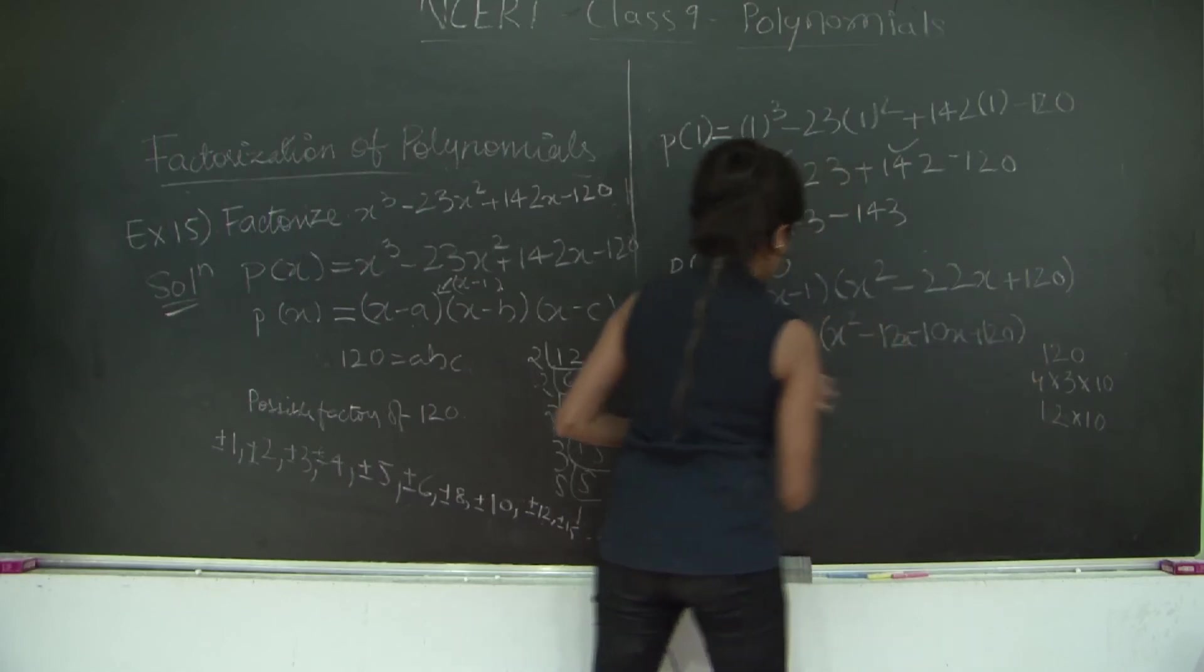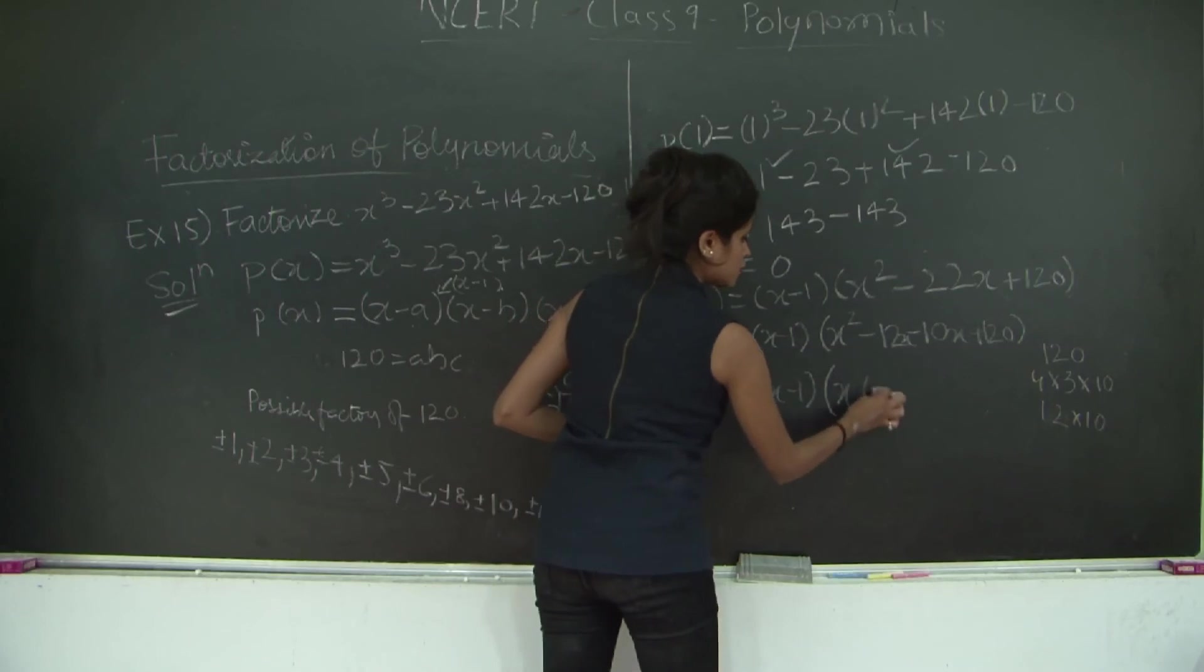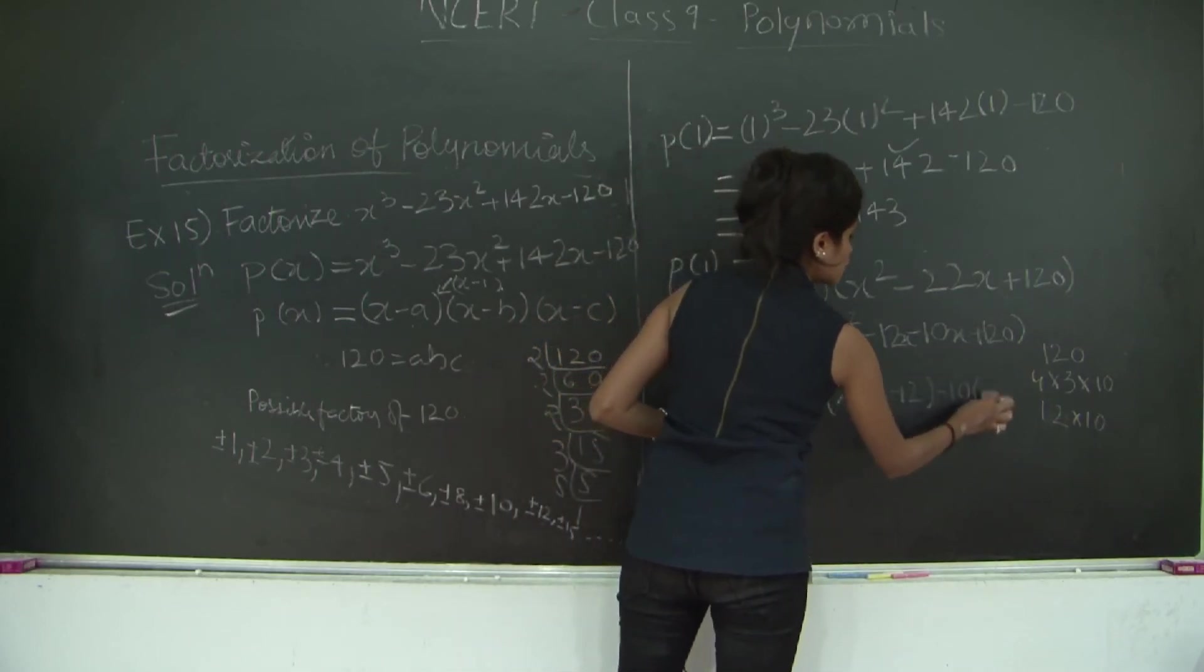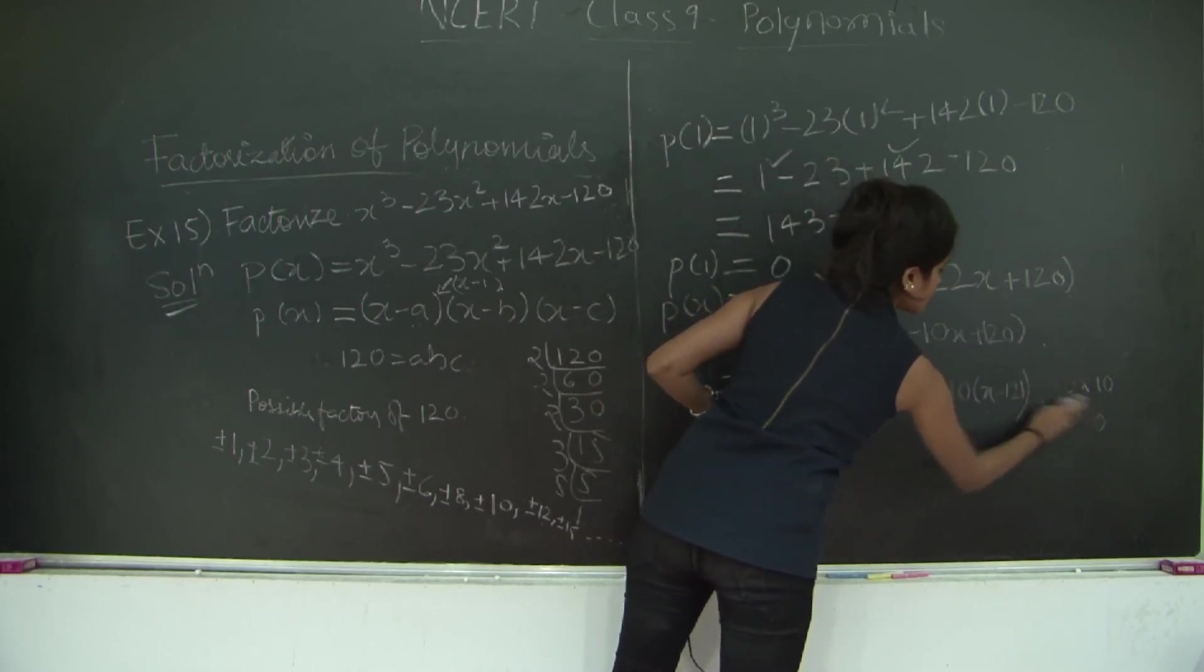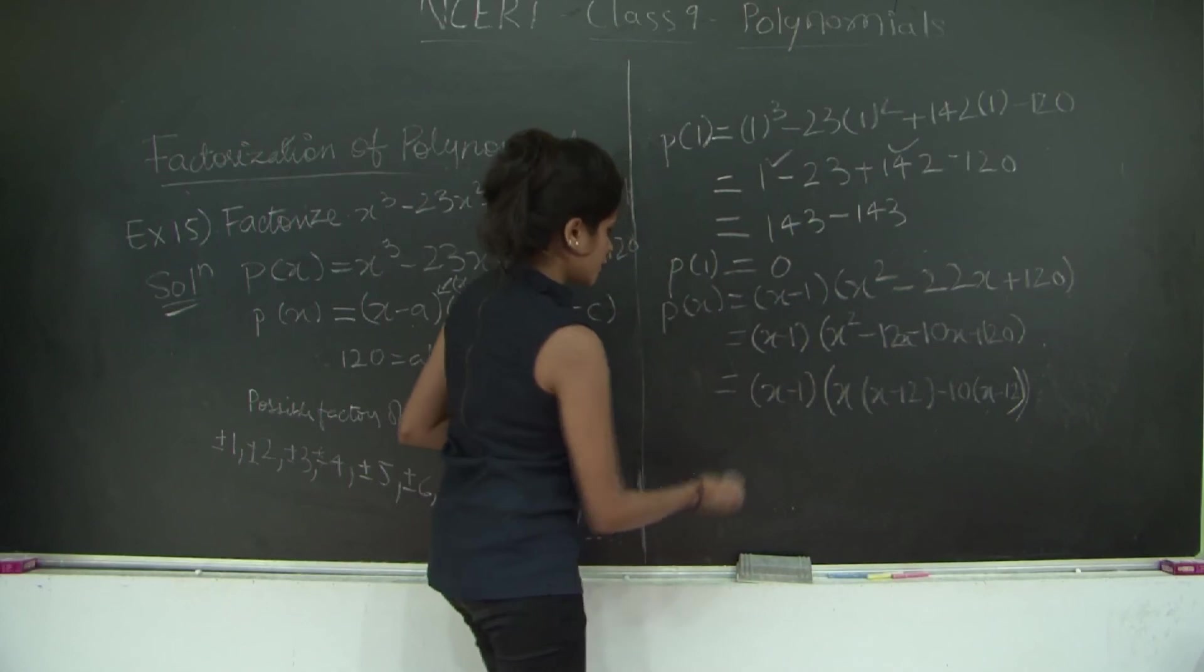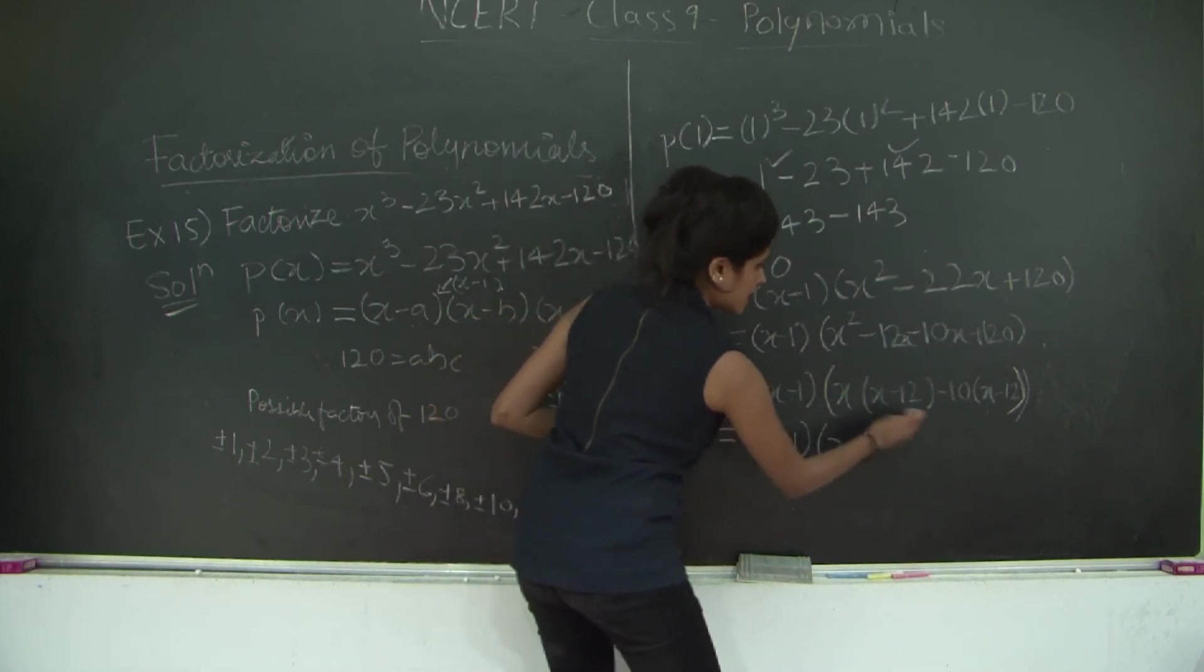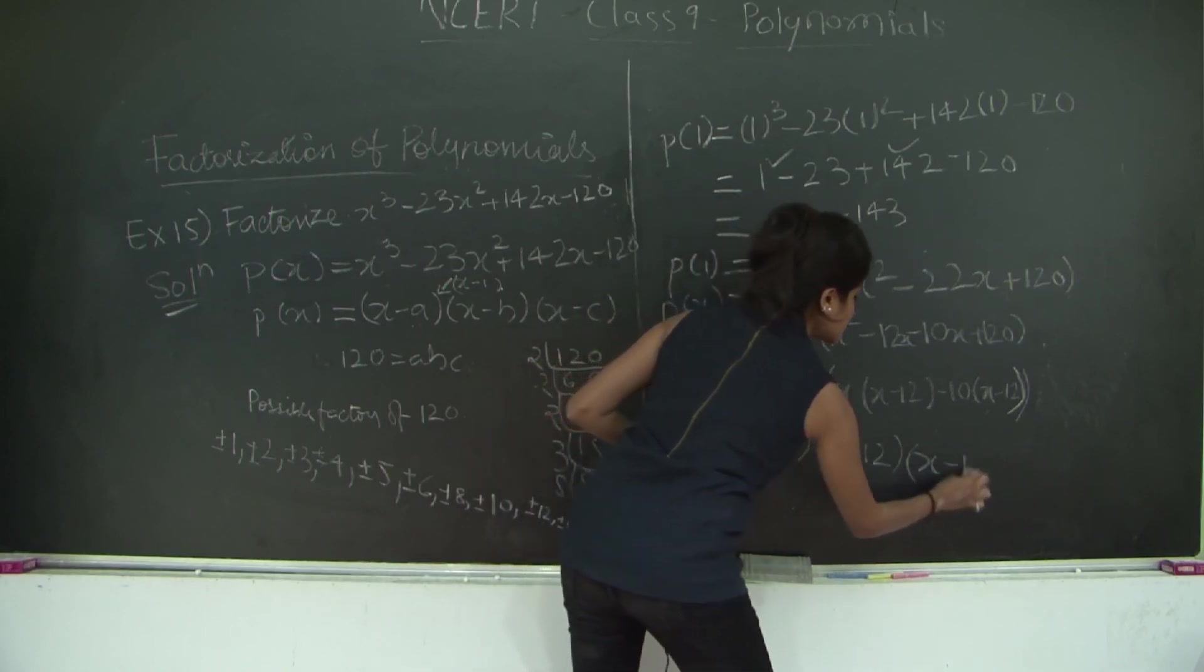(x - 1) will be as it is. x² - I am splitting -22 into -12x and -10x + 120. This will be (x - 1), and taking x - 12 common from these two terms, you get (x - 12)(x - 10).